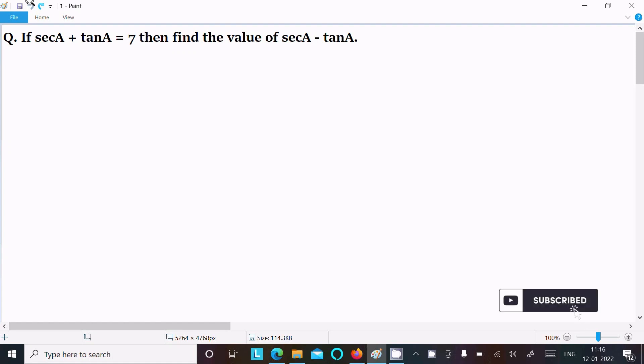Going to find the value of secA minus tanA. The given is secA plus tanA equal to 7. So let's see the answer. First, writing the given: secA plus tanA equal to 7.